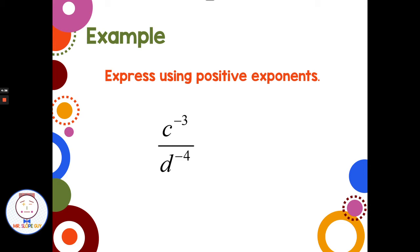What if we have a negative exponent in the numerator and a negative exponent in the denominator? To make c have a positive exponent, I drop the base and exponent to the denominator, making it c to the positive third. For d to the negative four in the denominator, I actually bring it up to the numerator. If it starts in the numerator, drop it to the denominator to flip the sign. If it starts in the denominator, bring it to the numerator to switch the sign from negative four to positive four.